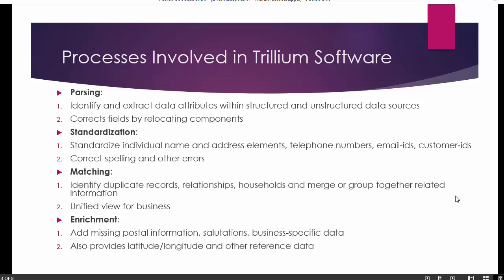The next important process is enrichment. Once we have standardized and merged unique records, we need to enrich them. For example, if you have an address with a five-digit zip code for a US country, you can enrich it by adding the zip-plus-four code. Trillium will try to enrich postal information, salutations, business-specific data, and also provides latitude and longitude or any other reference data for addresses. These are the processes involved in cleansing data using Trillium software.